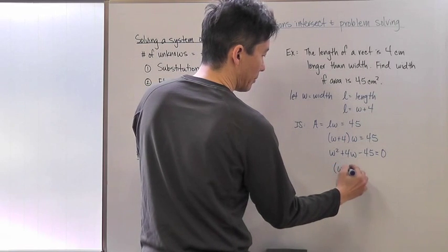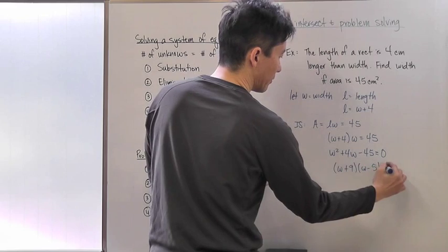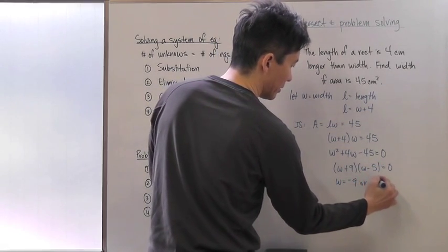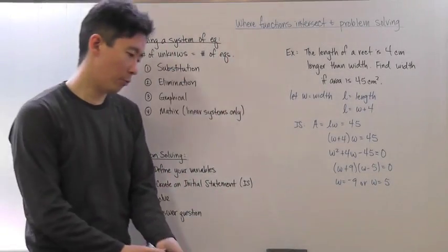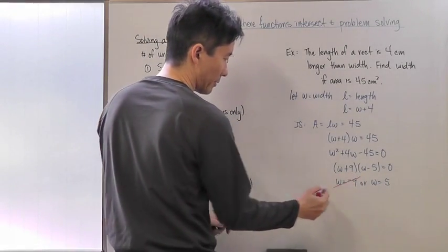Factoring gives (w + 9)(w - 5) = 0, so w = -9 or w = 5. Since we're dealing with a width and width cannot be negative, we eliminate the negative solution.